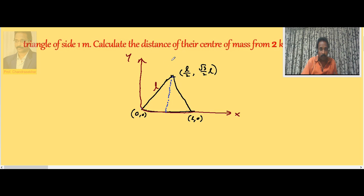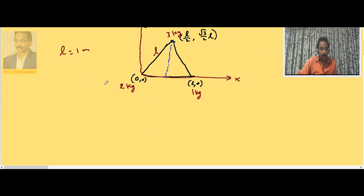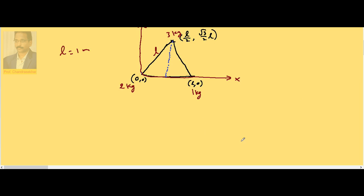Now for the mass arrangement: place the 2 kg mass at the origin (0, 0), 1 kg at (L, 0) on the x-axis, and 3 kg at (L/2, (√3/2)L) in the plane. Here L is given as 1 meter.